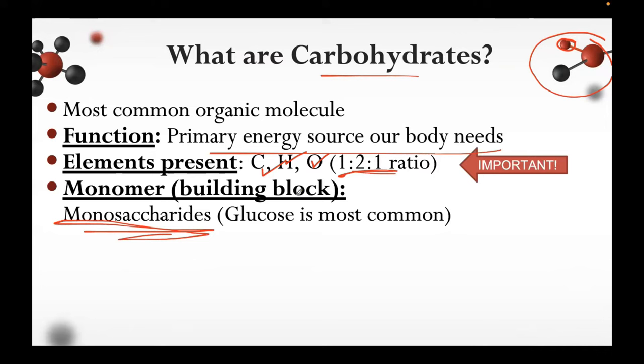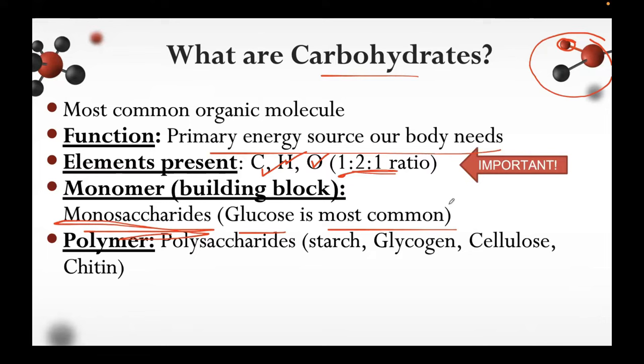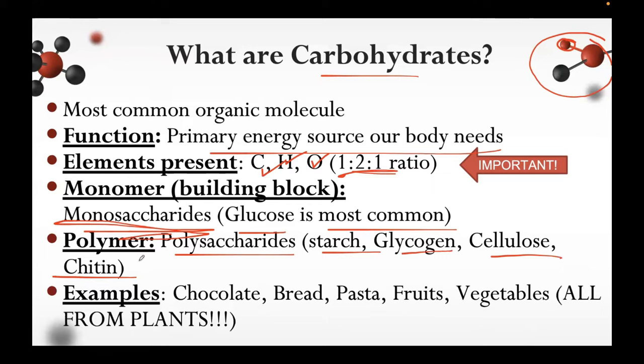The polymer is formed when monomers are joined together. The polymers of carbohydrates include polysaccharides, with examples being starch, glycogen, cellulose, and chitin. Carbohydrates come from foods such as chocolate, bread, pasta, fruits, vegetables, and all plant-based foods. Plants also have carbohydrates; they just differ in structure.